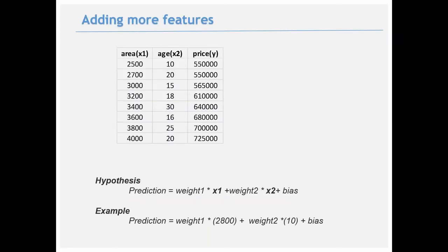For multiple features in linear regression, say area and age of the house, the hypothesis becomes: prediction = w1*x1 + w2*x2 + bias. Training with gradient descent finds the minimum cost for weights w1, w2 and bias. These can then be used to predict the price for new inputs, such as a given area and age.